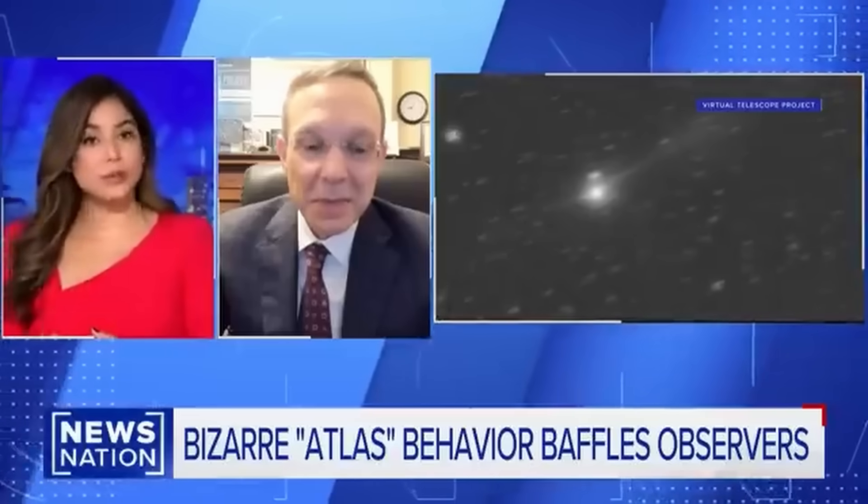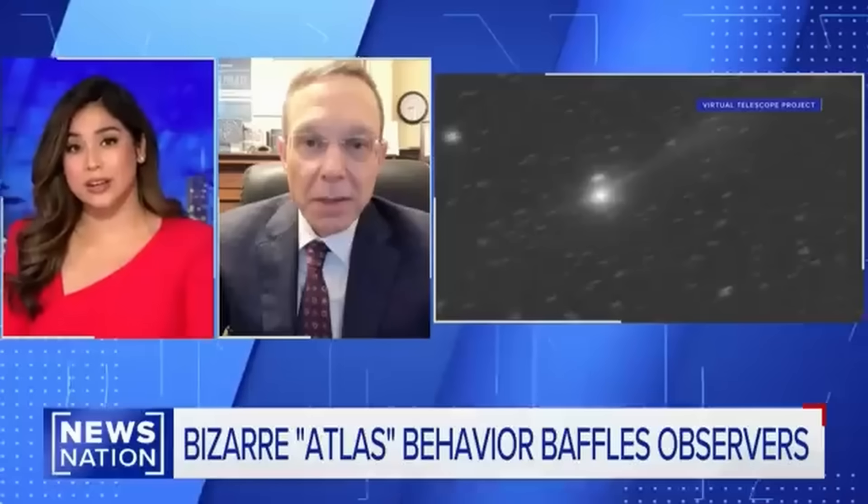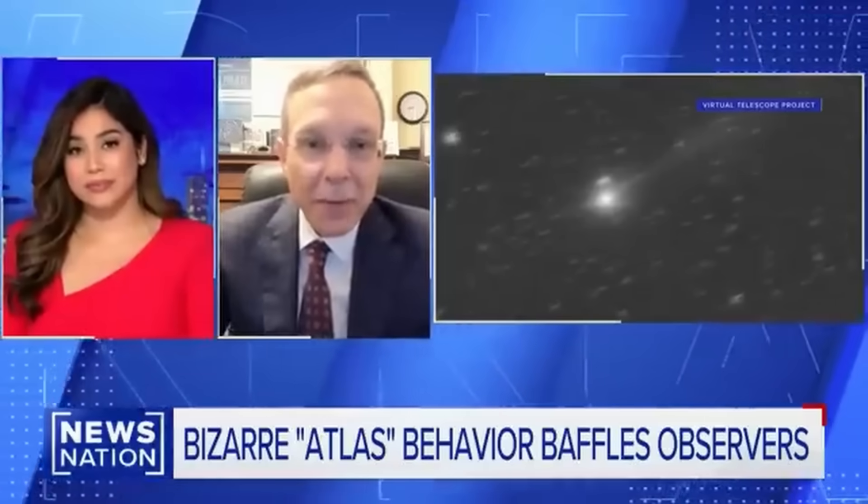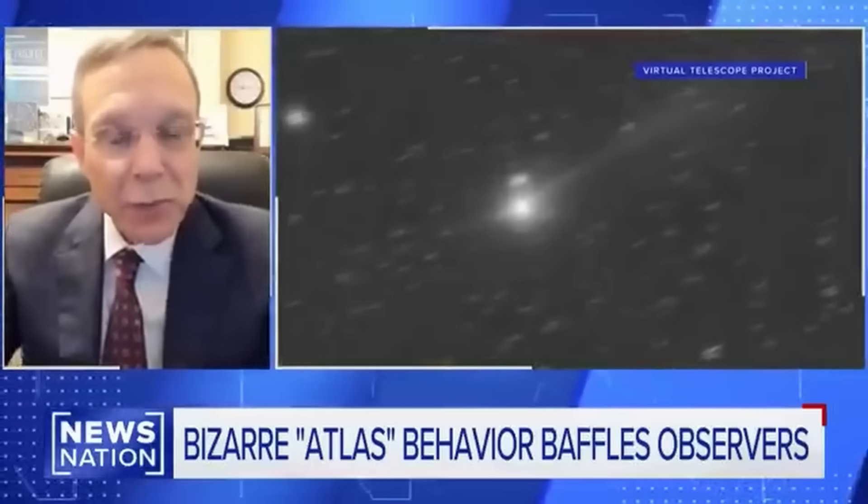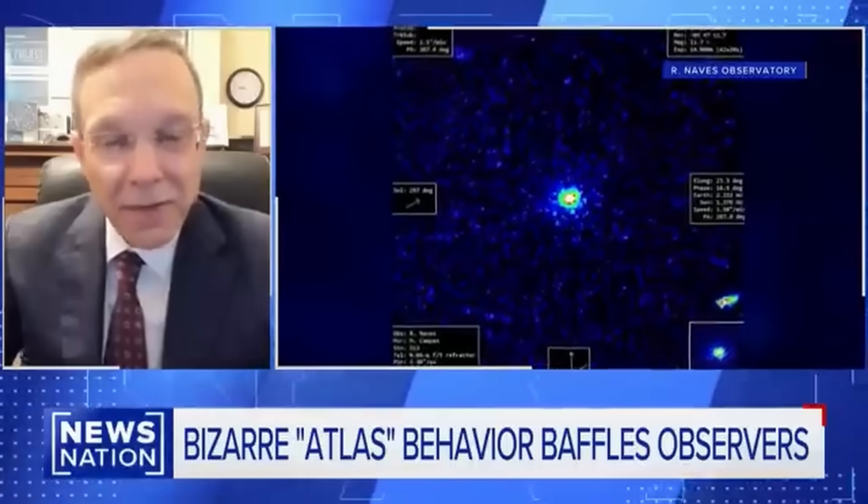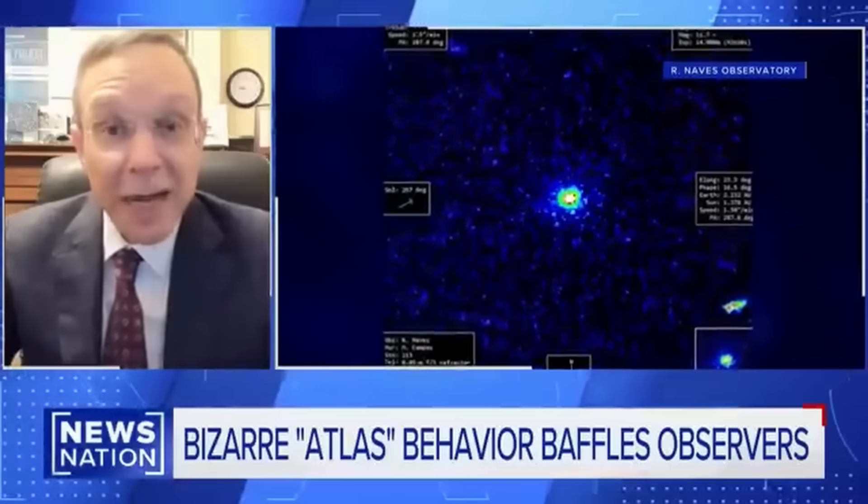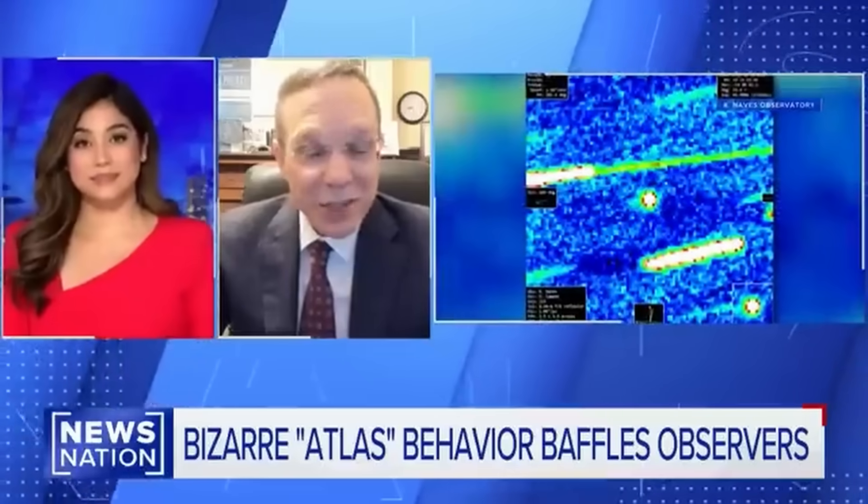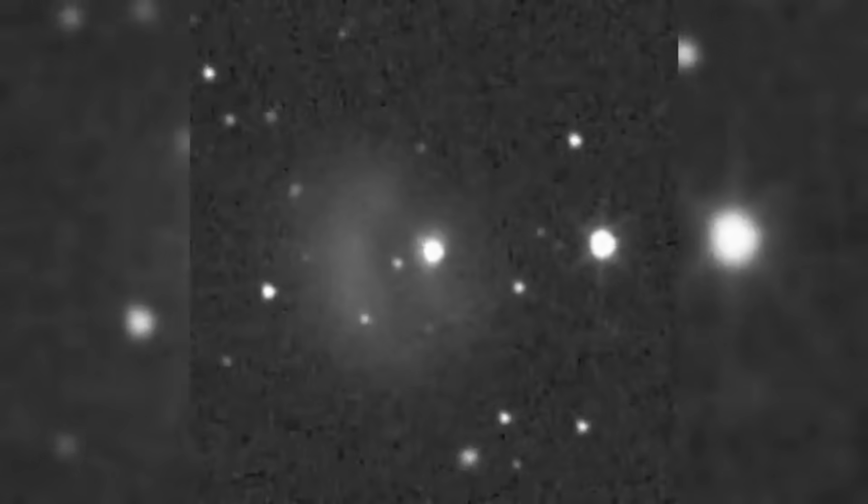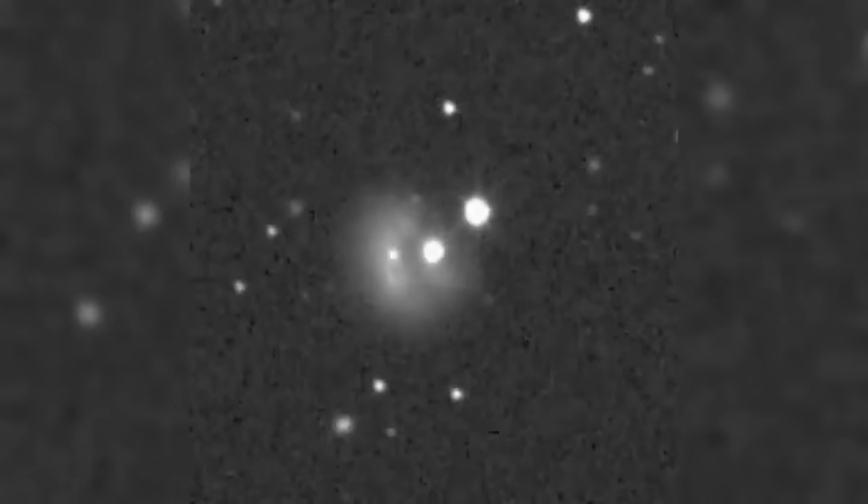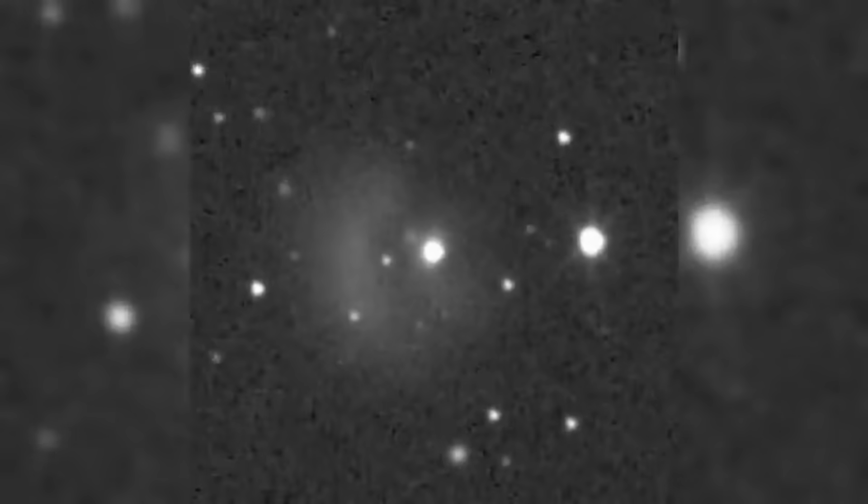The hill sphere marks the region where a planet's gravity becomes stronger than the sun's pull. For Jupiter, this zone stretches tens of millions of miles. Most natural objects never hit this boundary because their paths are shaped by chaotic forces. Solar radiation pressure, collisions with dust, uneven outgassing. They either fall deeper into Jupiter's gravitational well or stay far outside its influence. The boundary acts more like a mathematical line than a physical target. When an object enters the hill sphere, Jupiter's gravity begins to dominate. The object can be captured, accelerated, or ejected.